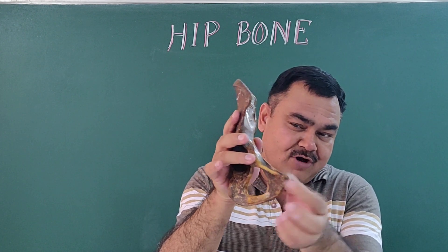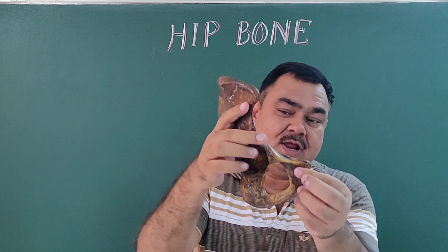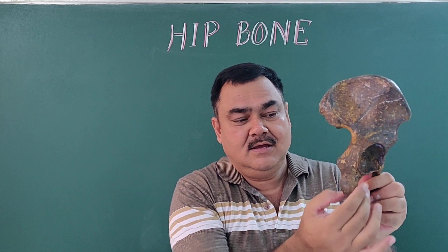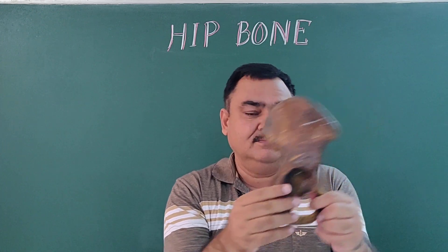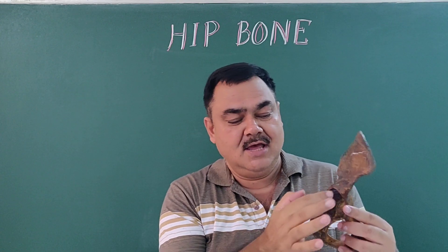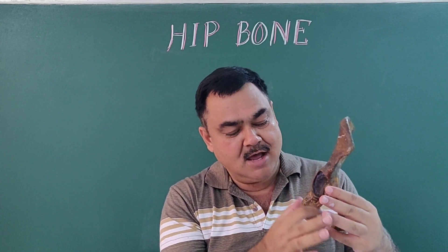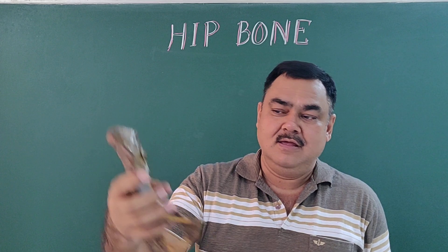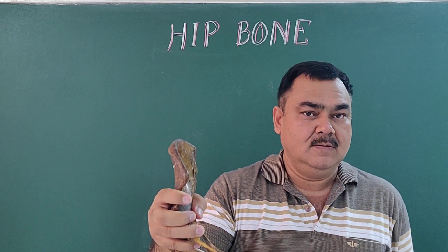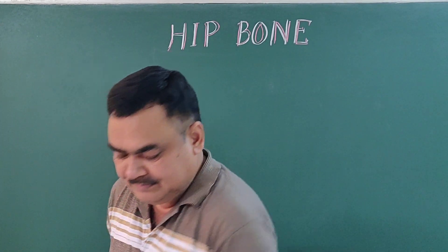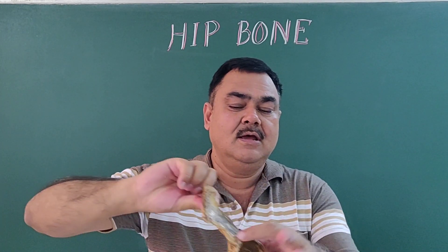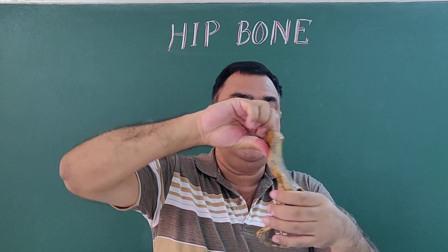Anterior to the obturator foramen is the pubic bone, and posteriorly there is the large ischial tuberosity — the ischium. Keeping in mind these three things — the acetabulum, the iliac crest, and the obturator foramen — this bone here is the right hip bone.